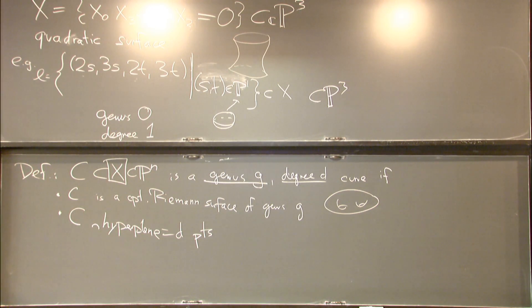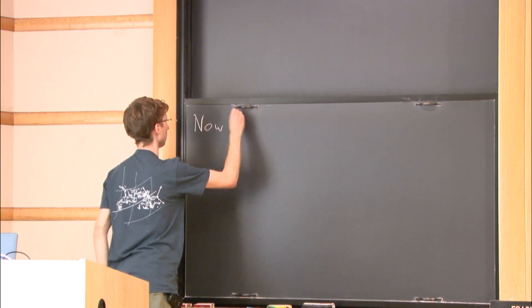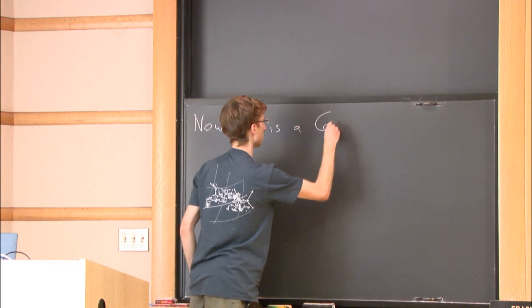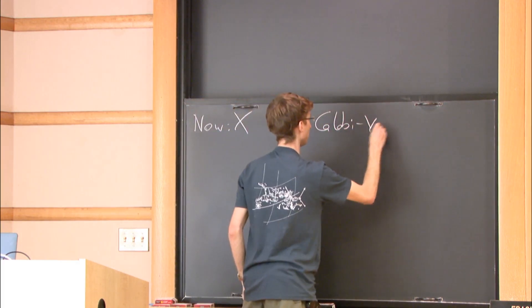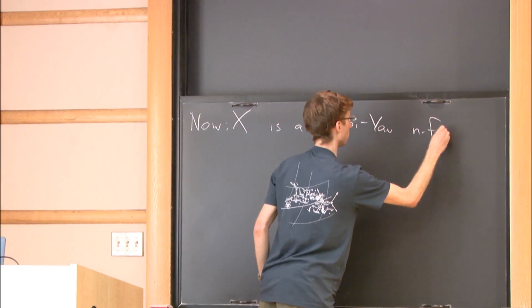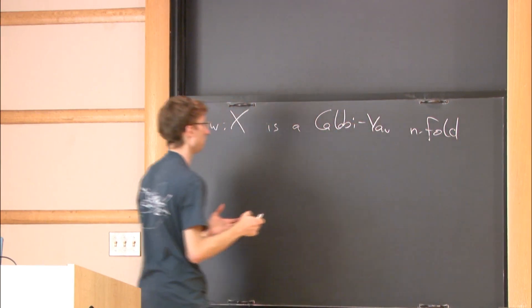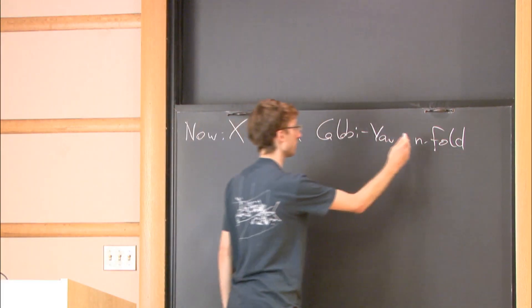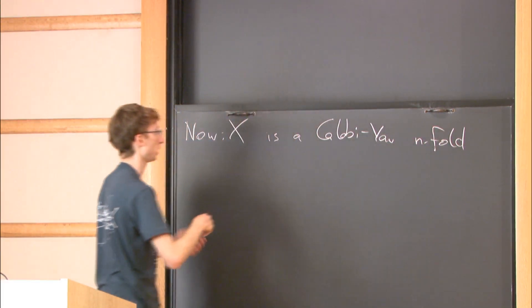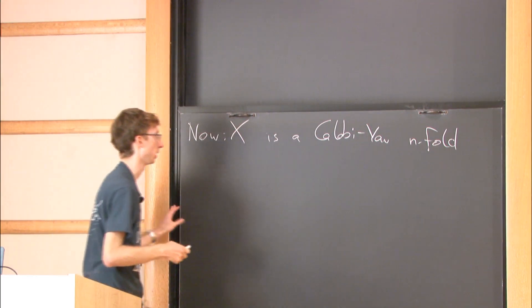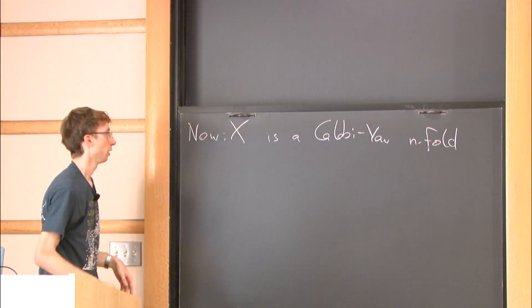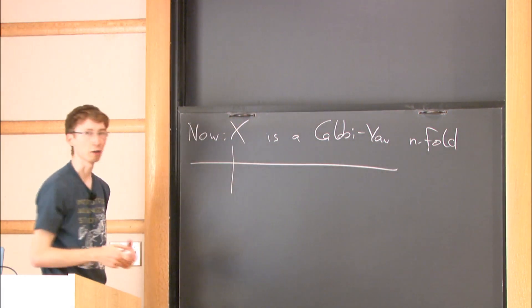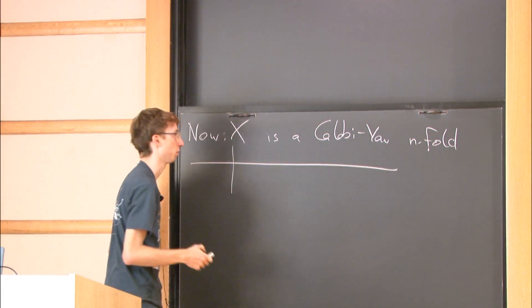In the rest of the talk, X will be what is called a Calabi-Yau n-fold. Shortly, that means it is a simply connected complex n-manifold such that it has a vanishing holomorphic n-form. More concretely, it has a very special geometry. You have seen examples of Calabi-Yau manifolds before.